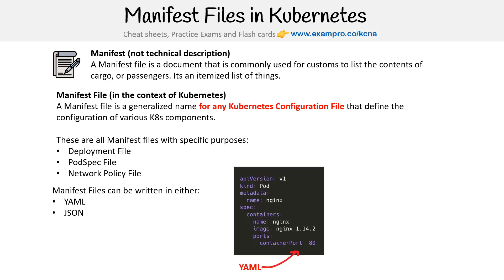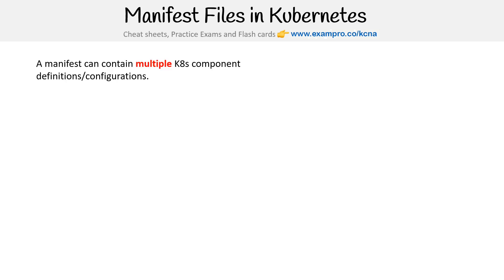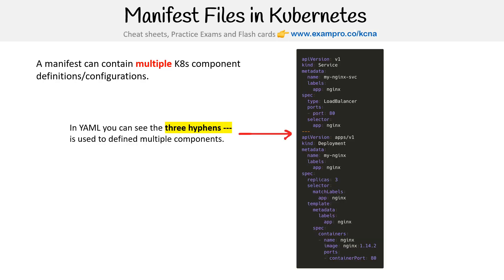So here's an example of it in YAML, and here's an example of it in JSON. A manifest file can contain multiple Kubernetes components, which makes sense because we said a manifest is an itemized list of things — so it can hold multiple definitions and configurations.